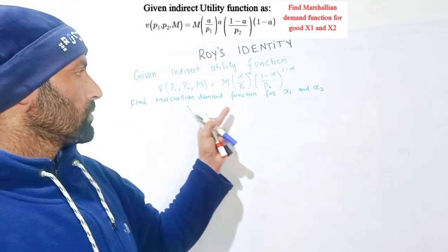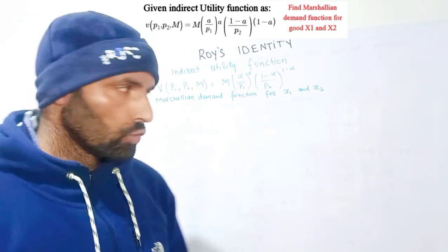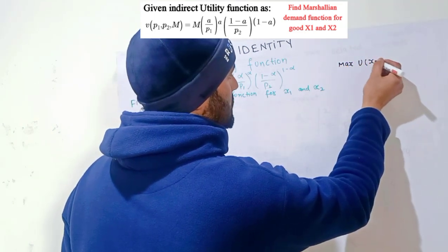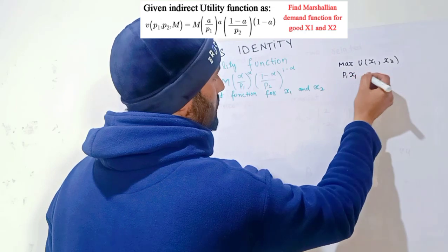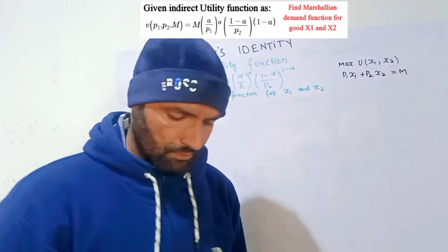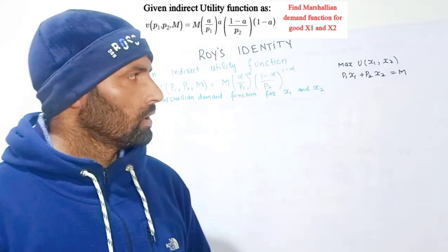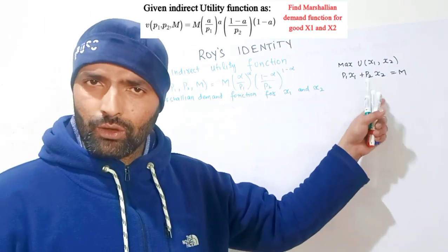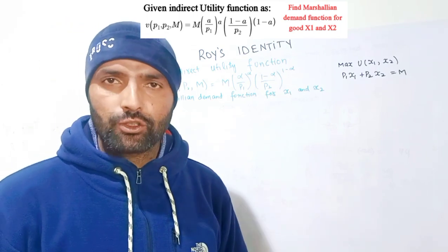We need to find the Marshallian demand function for goods x1 and x2 by applying Roy's identity. There are two ways to find the Marshallian demand function: first, we can maximize utility subject to the budget constraint p1*x1 + p2*x2 = m, forming the Lagrangian and taking partial derivatives.